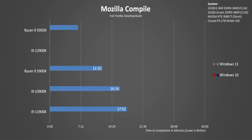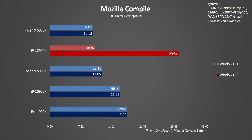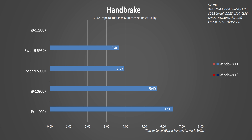Let me explain with a Mozilla Firefox Compile first. On Windows 11, the 12900K is super competitive — it easily beats the 5900X and of course destroys previous Intel generations. But adding the Windows 10 results shows exactly why we wanted to run both OSes. The 12900K is simply limping behind with terrible performance. The workload is a disaster for Intel on Windows 10. Handbrake shows similar results — Intel edges out the competition's finest CPU.